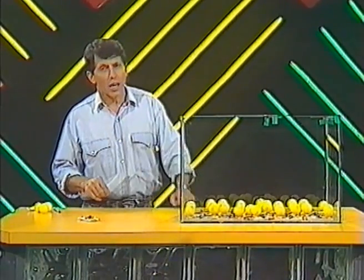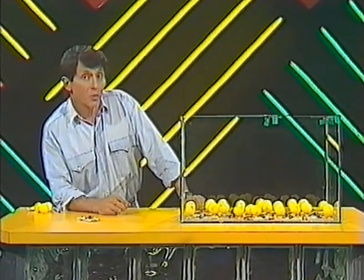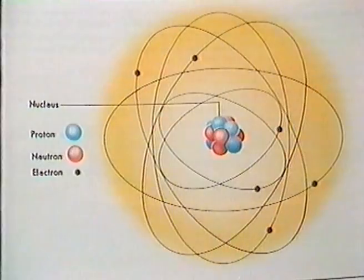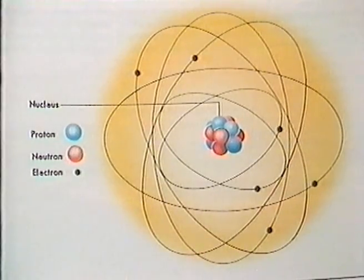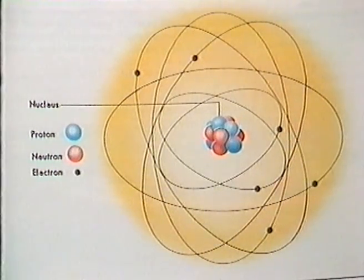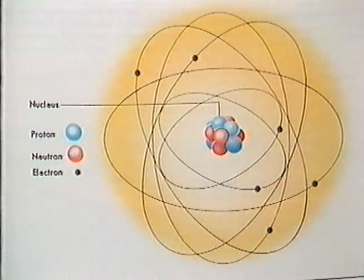If we could see atoms, they would look something like this. In the centre, little particles called protons and neutrons, and whizzing around the outside at great speed, even smaller particles called electrons.